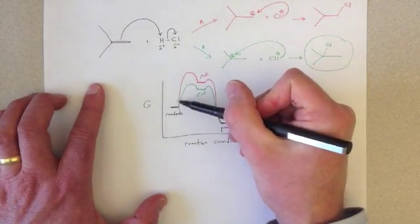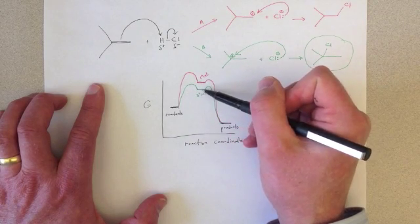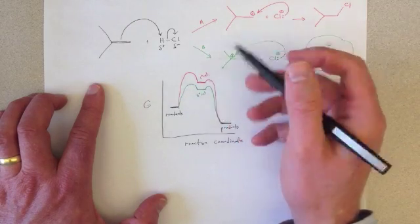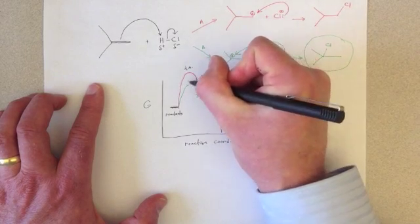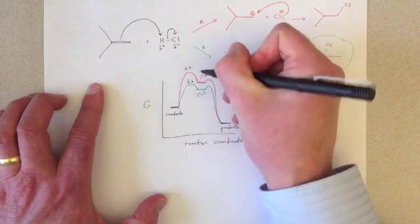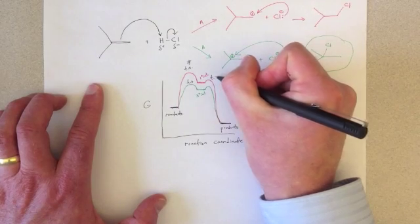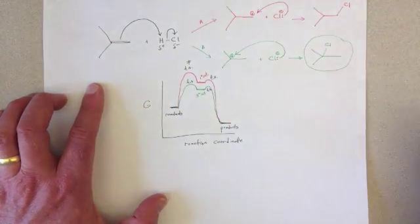Each of these transitions from reactants to intermediates, or from intermediates to products, have to go through a high energy transition state, which I'll label as TS. Sometimes you see these as double daggers. And there are transition states as we move from intermediates to products.